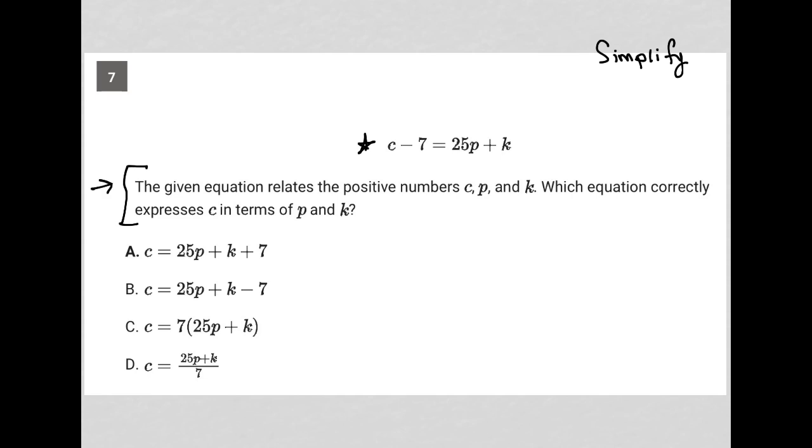This question says the given equation relates the positive numbers C, P, and K. Which equation correctly expresses C in terms of P and K?